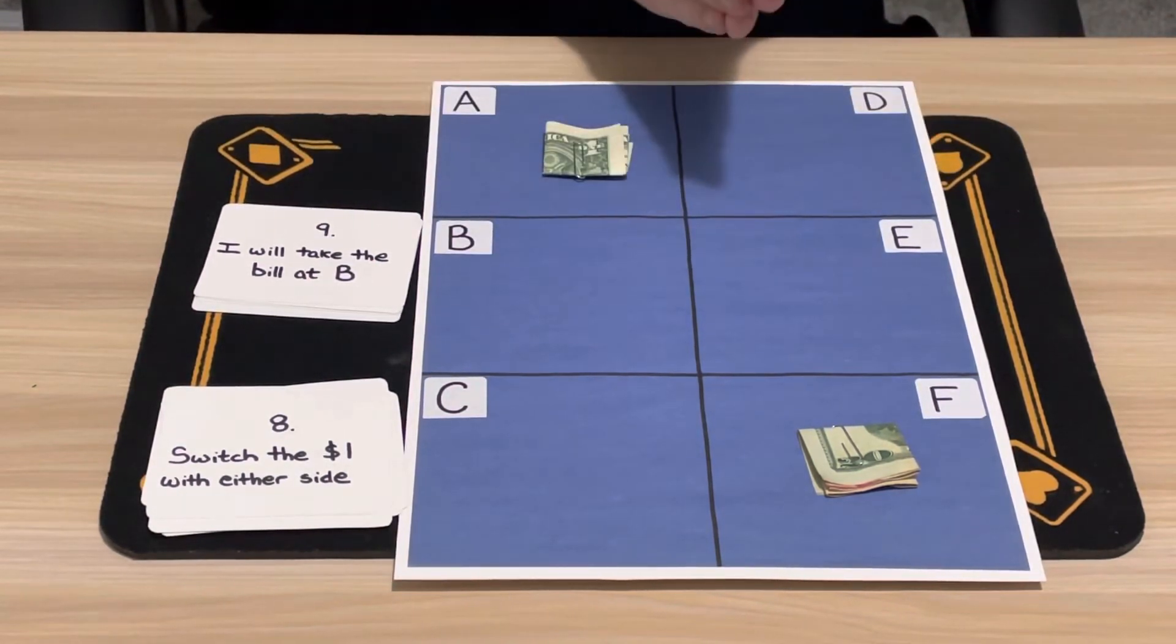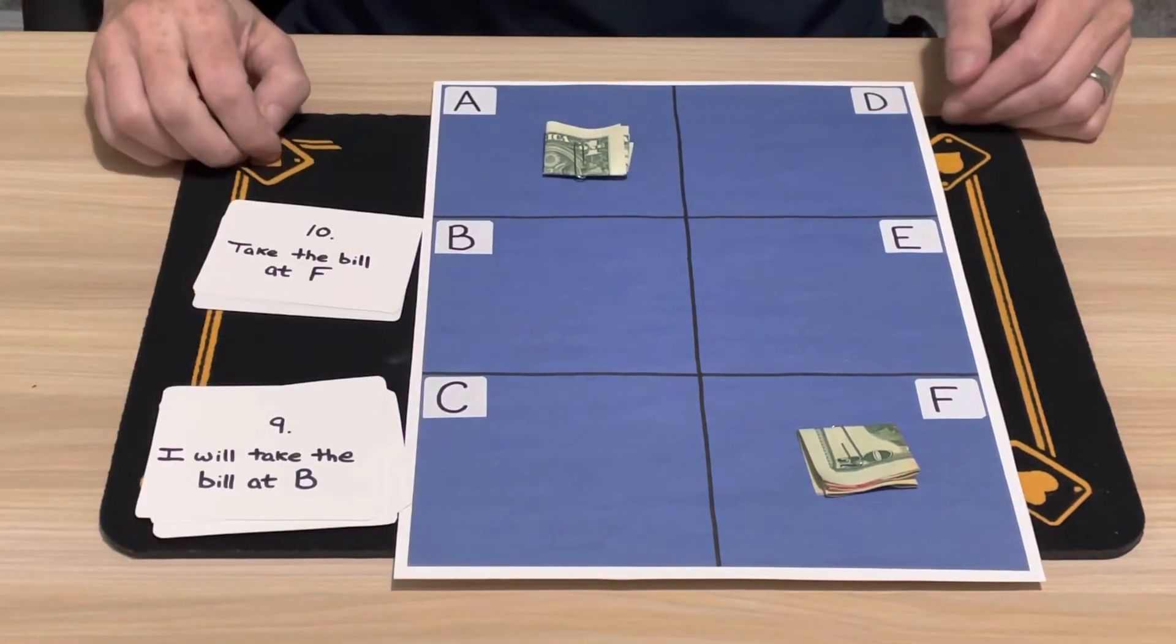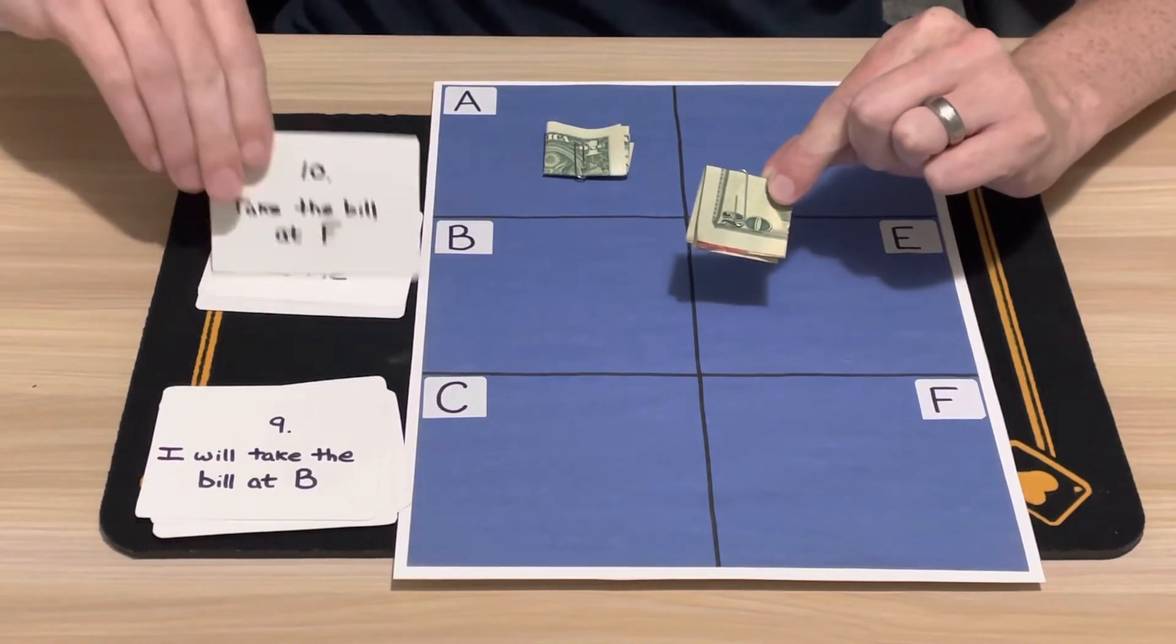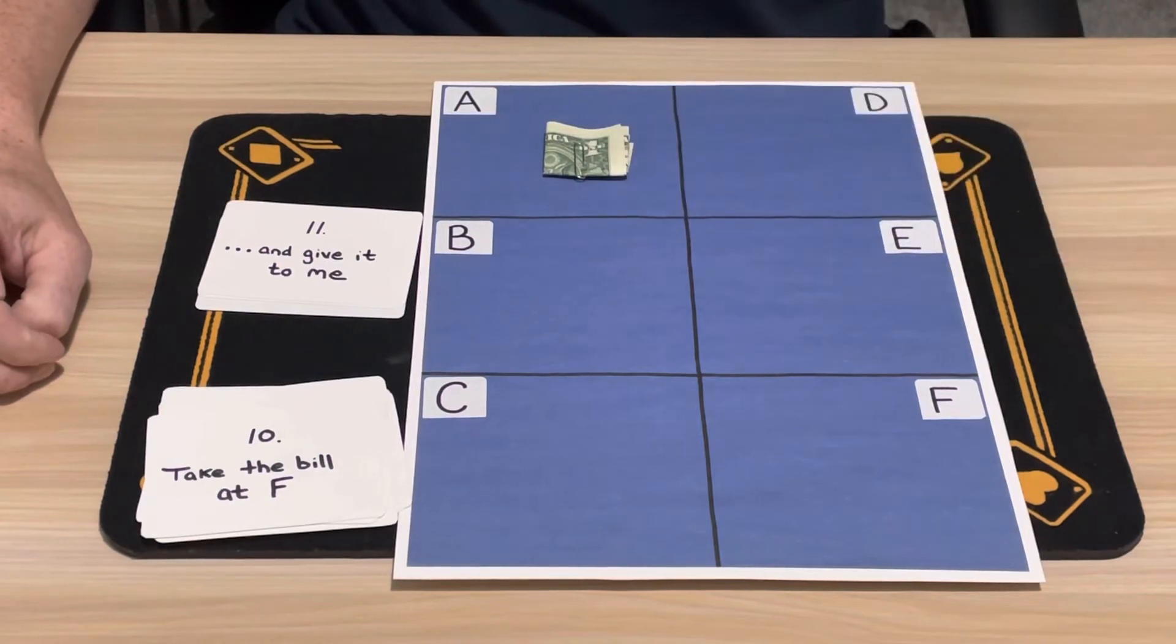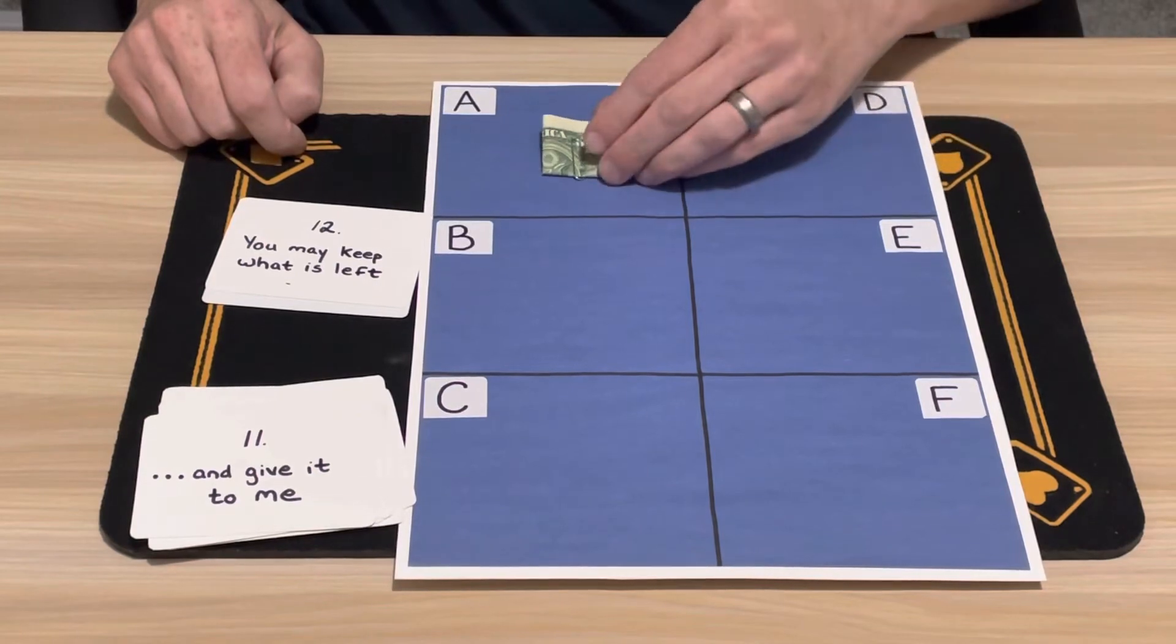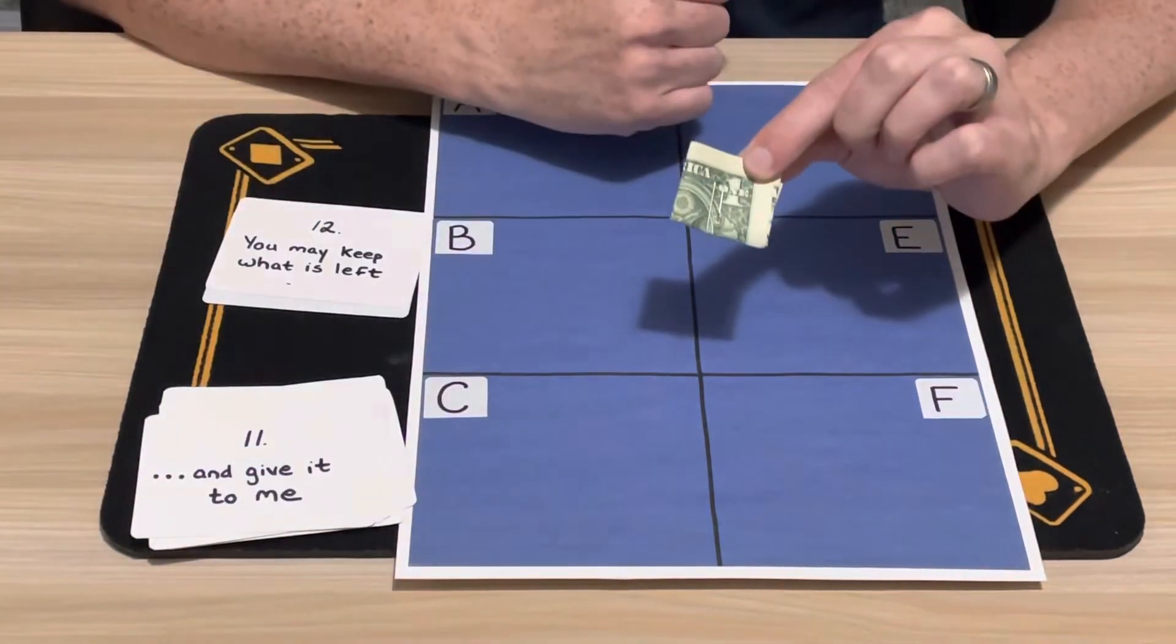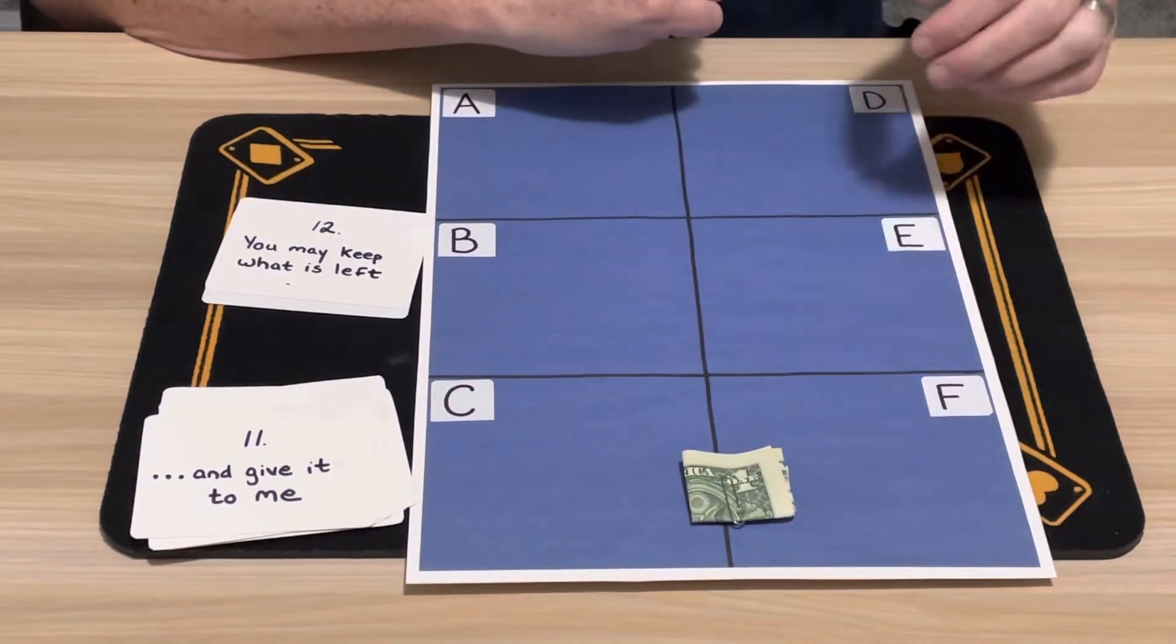Step 10: take the bill at F and give it to me. $20 is now off the table. Final step: you may keep what is left, which is your $1 bill that you actually loaned me at the beginning of the trick. So I'll just give you your $1 bill back. And thank you for playing.